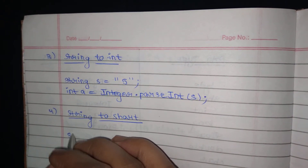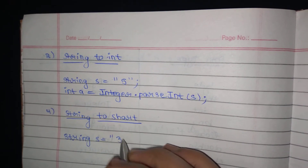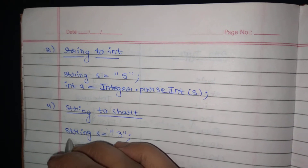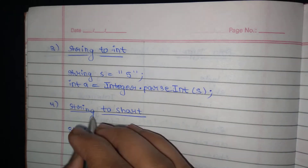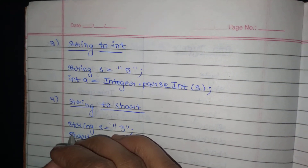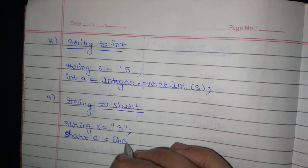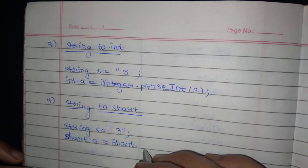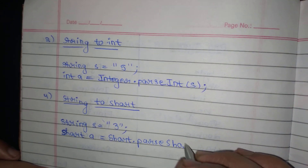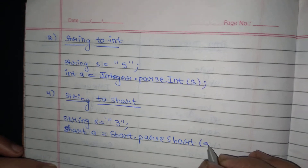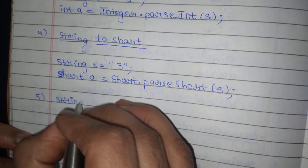Fourth: string to short. Suppose I am taking a variable string s equal to 2, or you can take 3 — any value. Then short a — here s is small for the variable type — is equal to Short with capital S, as it is the wrapper class, dot parseShort, and then s, the variable.